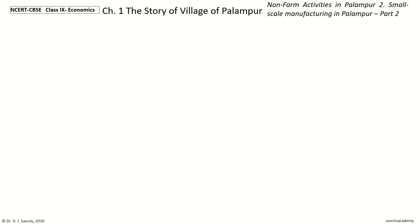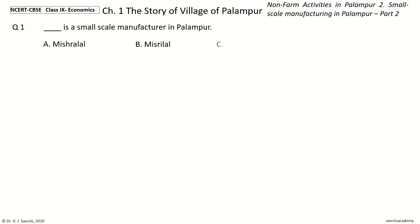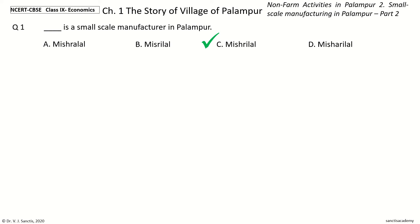This comprises 18 questions. Question 1: Dash is a small scale manufacturer in Palampur. The options are Mishralal, Misrilal, Mishrilal, Misharilal. And the answer is Mishrilal. So, Mishrilal is a small scale manufacturer in Palampur.